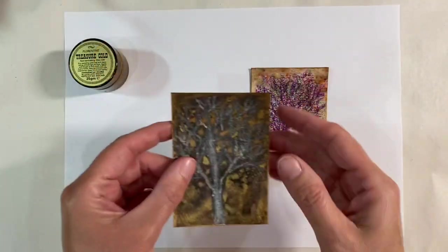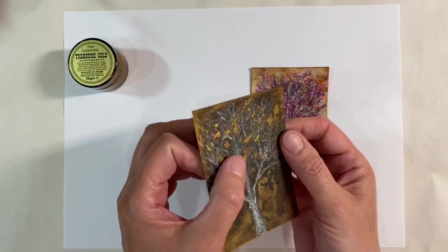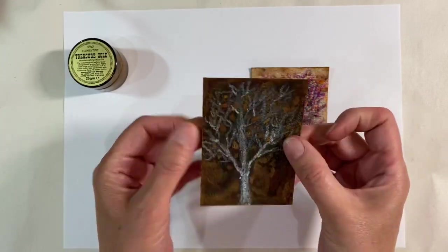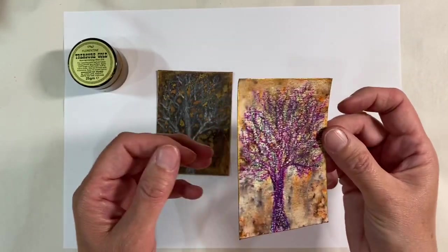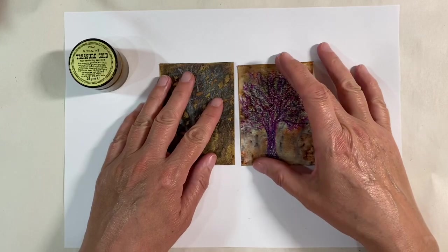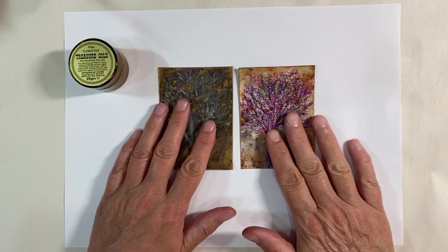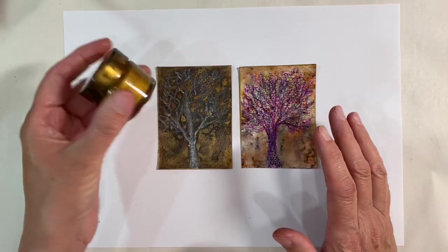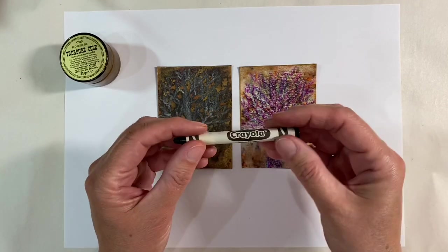So let me just show you what my cards look like now that the Treasure Gold has dried. So that's the one that was done on black cardstock. I love that, it's so beautiful. And this was the one that was done on white. That just adds a really nice touch. If you've got Inka Gold, those would work equally as well. Any of your gilding wax type materials.